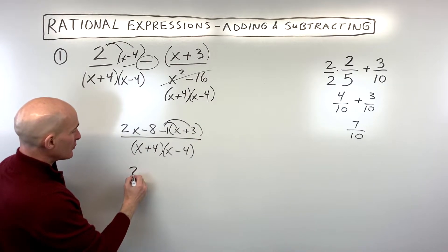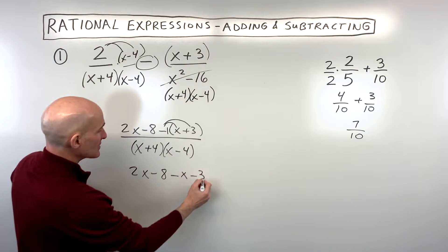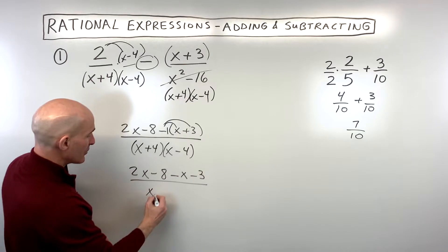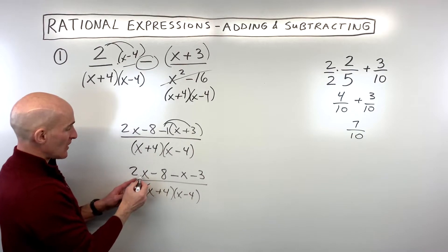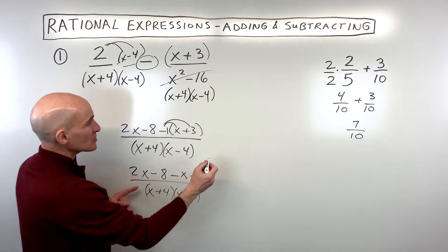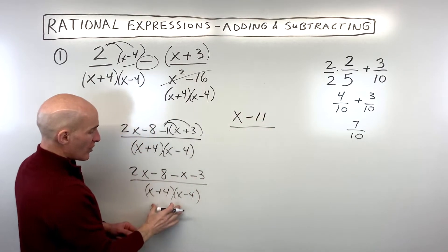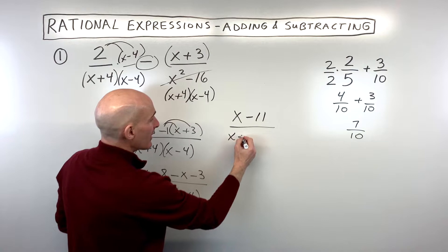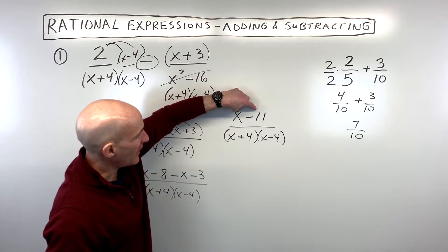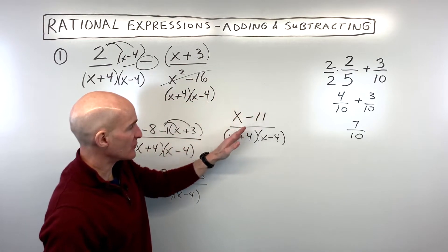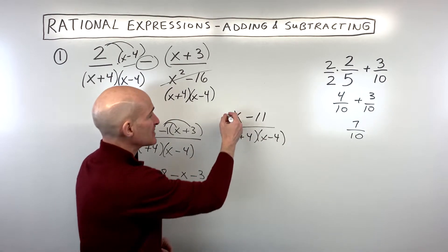You can think of this as a negative 1 times x and a negative 1 times 3. So let's simplify a little bit further. We have 2x minus 8 minus 1x minus 3, all over the common denominator. Then we combine like terms: 2x minus 1x is x; negative 8 minus 3 is negative 11. That's all over our common denominator of x plus 4 times x minus 4. Sometimes you can factor the numerator and cancel with the denominator, but in this case, this is as far as we can go.